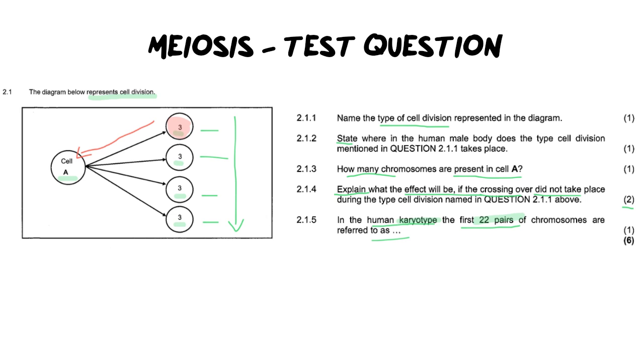Remember the first 22 pairs of the chromosomes in a karyotype are your autosomes. These are the chromosomes that are responsible for all the other genes other than your sex determining characteristics.